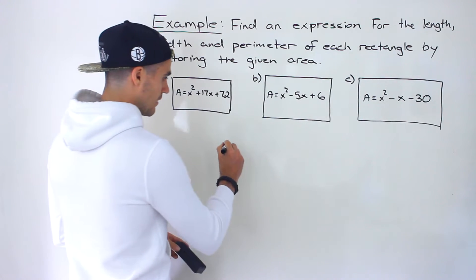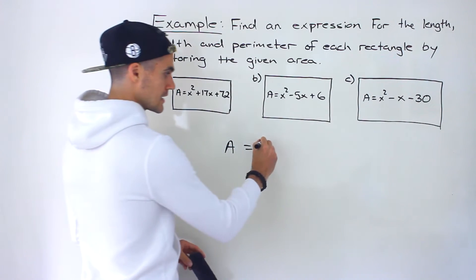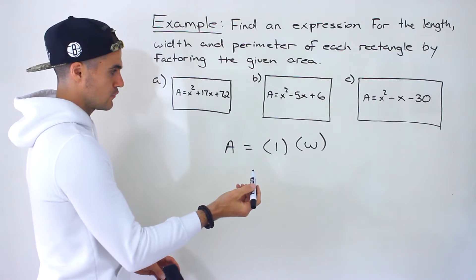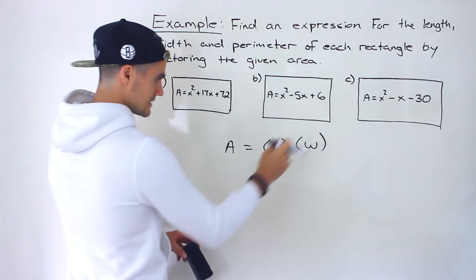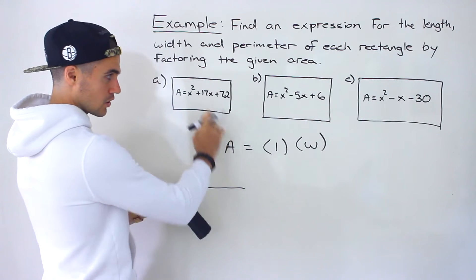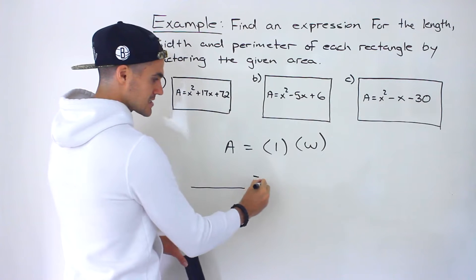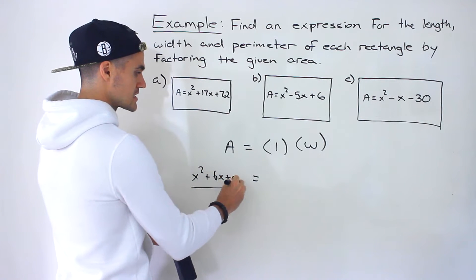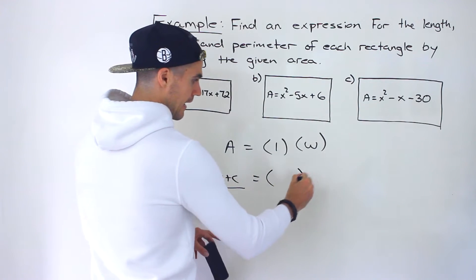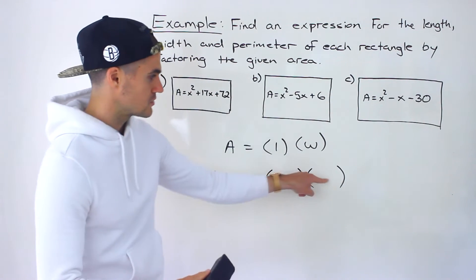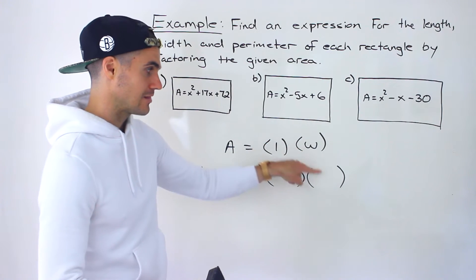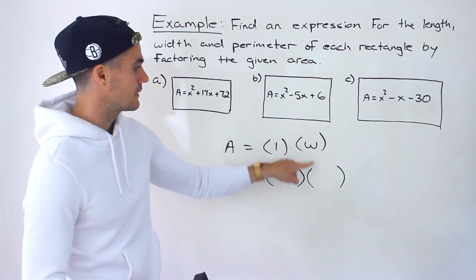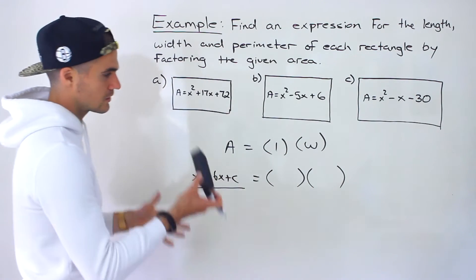How are we going to do that? The area of a rectangle in general is length times width — that's the formula. The areas in this case are quadratic expressions. All of them are in the format x squared plus bx plus c. What we can do is take that quadratic expression, factor it, which gives us two factors that are multiplying. Those two factors become the length and the width. It doesn't actually matter which one we choose as length or width — they're interchangeable.